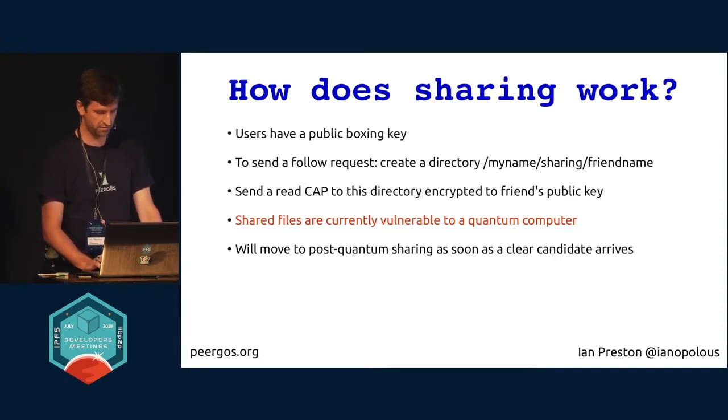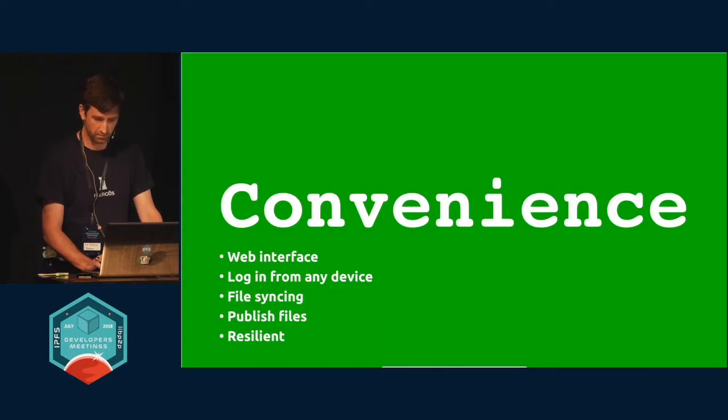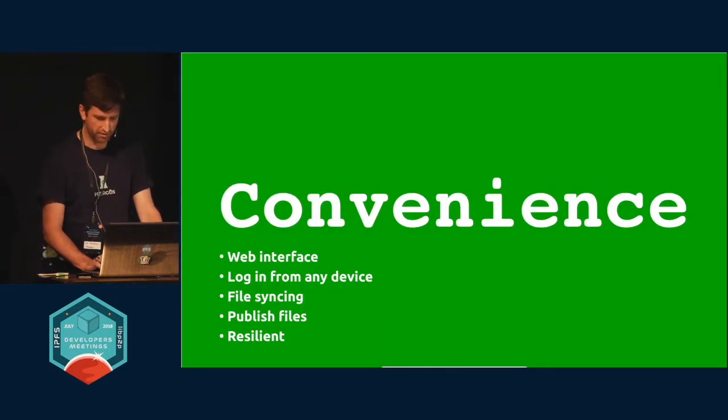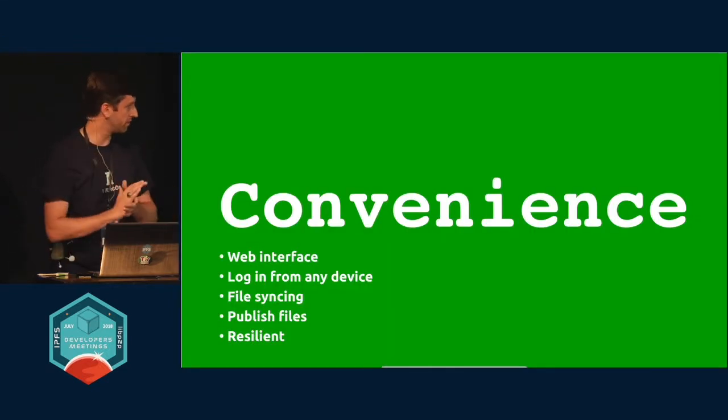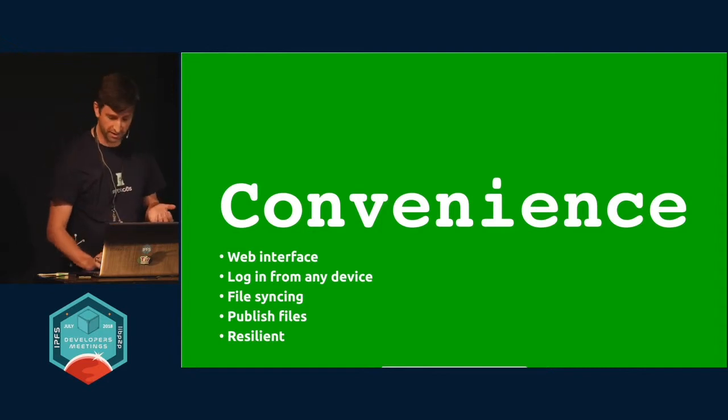Asymmetric crypto is the only thing in our system currently vulnerable to a quantum computer, if one is ever built. But we are looking into migrating away from that.